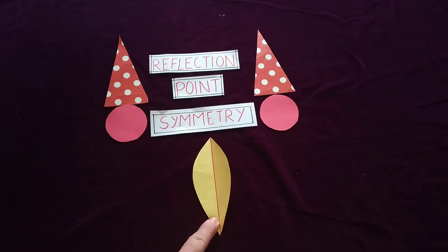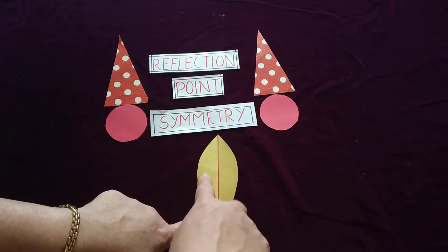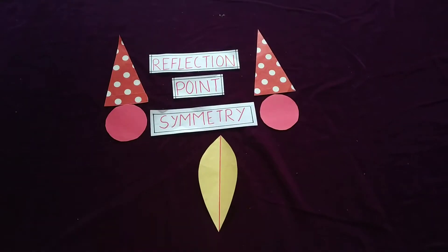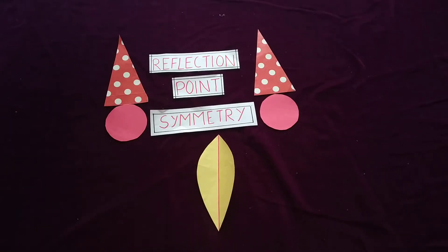Reflection symmetry is when a shape or a pattern is reflected in a line of symmetry or a mirror line. Whenever you get two figures where one line of symmetry divides the figure in two equal parts — or we can say the mirror image — then we can say that is reflection symmetry.